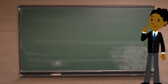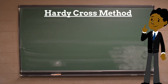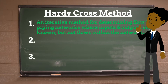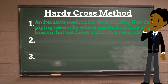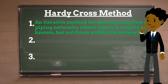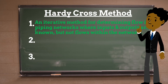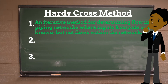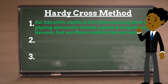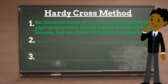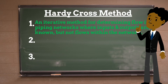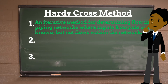Today we'll be talking about the Hardy Cross method. The Hardy Cross method is an iterative method for determining the flow in pipe network systems where the inputs and outputs are known, but the flow inside the network is unknown. The method was first published in November of 1936 by its namesake, Hardy Cross, a structural engineering professor at the University of Illinois at Urbana-Champaign.